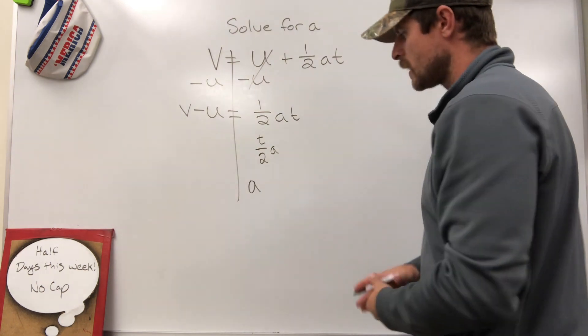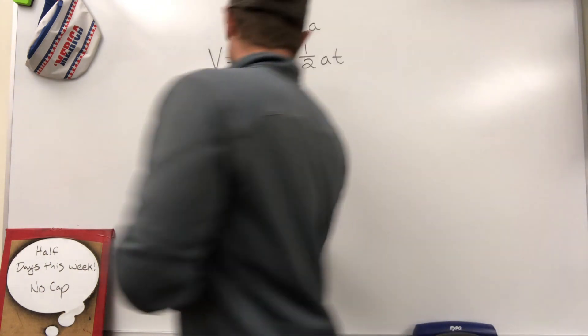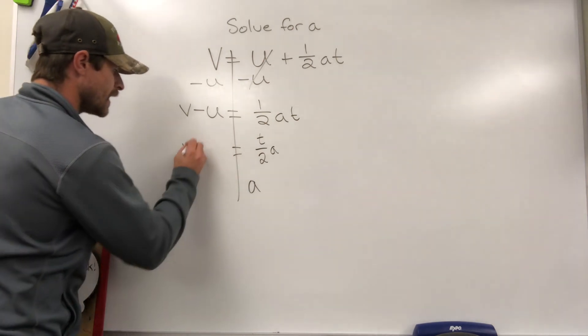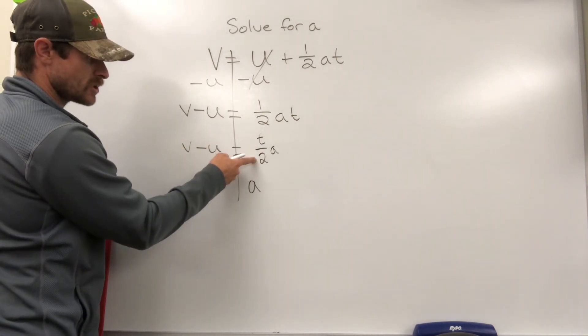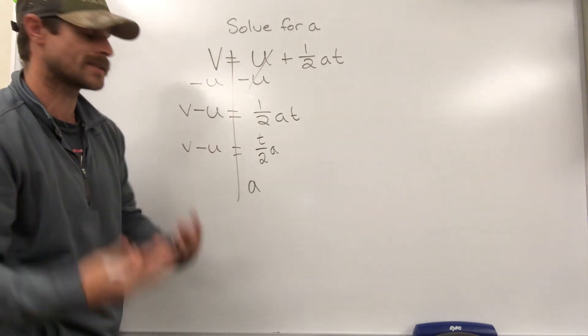One thing we should remember from algebra is that if we want to get rid of a coefficient that is a fraction, we need to multiply by its reciprocal.